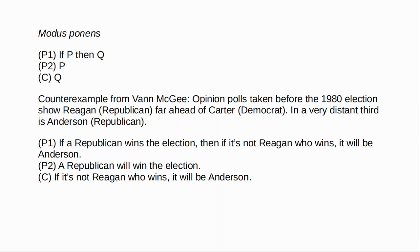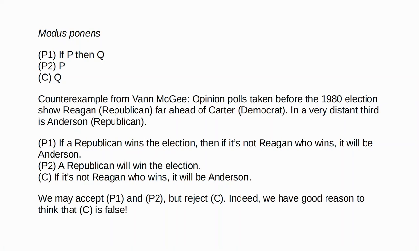Clearly this is of the form 'if P then Q and P', so we can apply modus ponens to produce the conclusion: if it's not Reagan who wins, it will be Anderson. Trouble is, it doesn't look like that conclusion is true. Even if we accept the truth of the premises, we shouldn't accept the truth of the conclusion. The premises are true, but the conclusion isn't — Anderson is not going to win. If it's not Reagan who wins, it'll be Carter. So McGee suggests we have true premises and a false conclusion.